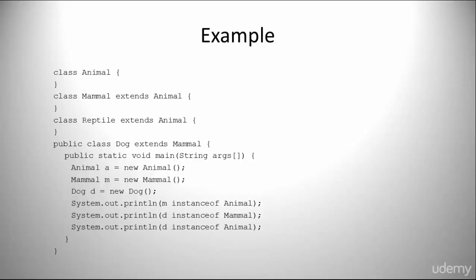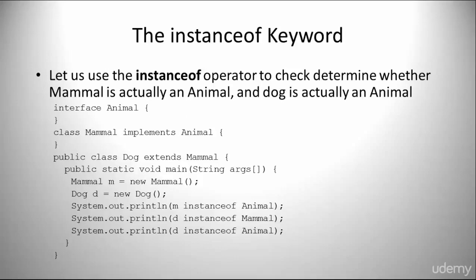Here is an example of some code. Feel free to write this out. We also have the instanceof keyword. Let's use the instanceof operator to check and determine whether Mammal is actually an Animal and Dog is actually an Animal.